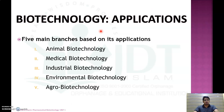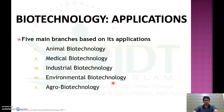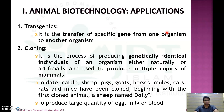Now coming to the applications of biotechnology, which is important from an exam point of view. We can divide the applications into five main branches: animal biotechnology, medical biotechnology, industrial biotechnology, environmental biotechnology, and agro-biotechnology.